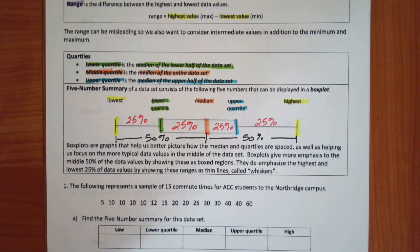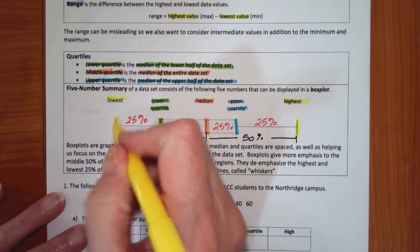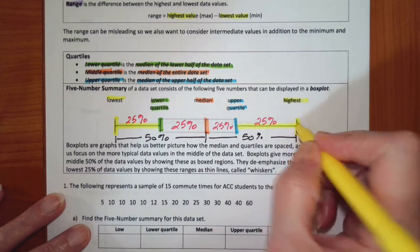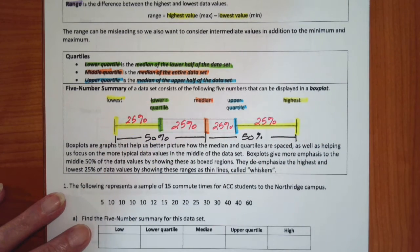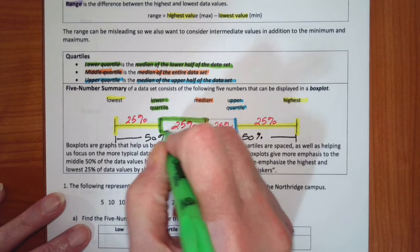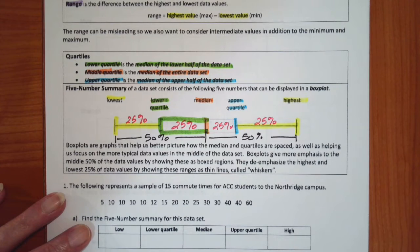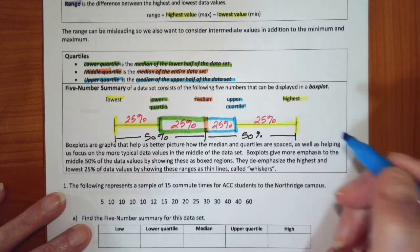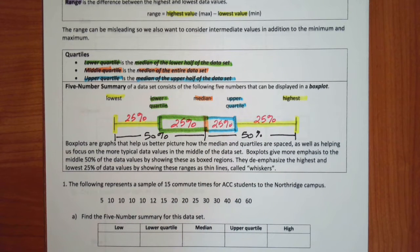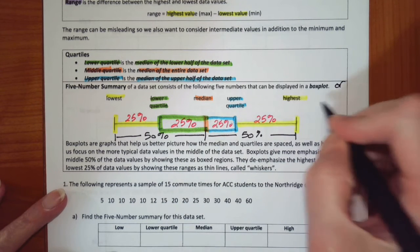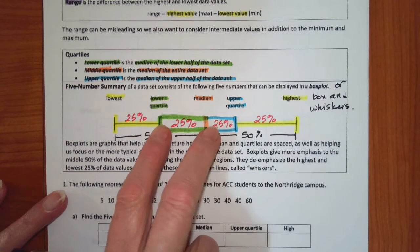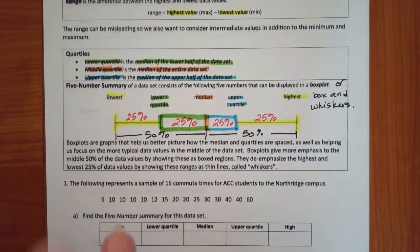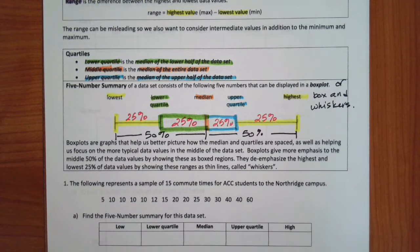So what we have is a graph called a box plot, or box and whiskers. Each whisker represents 25% of the data between two consecutive summary values. From the minimum to the lower quartile is 25%, from the lower quartile to the median is 25%, from the median to the upper quartile is 25%, and from the upper quartile to the maximum is 25%. Notice the boxes and whiskers are not the same width — it's not evenly spaced on the graph; it's where the data points actually are.